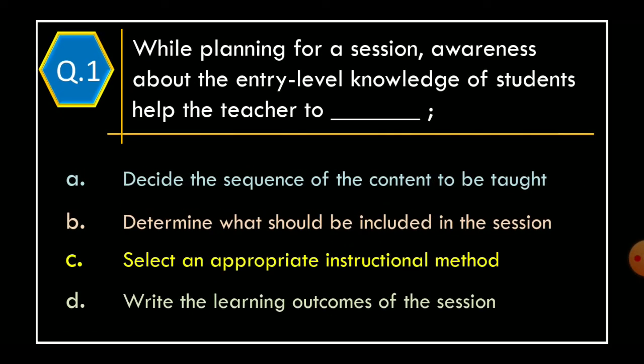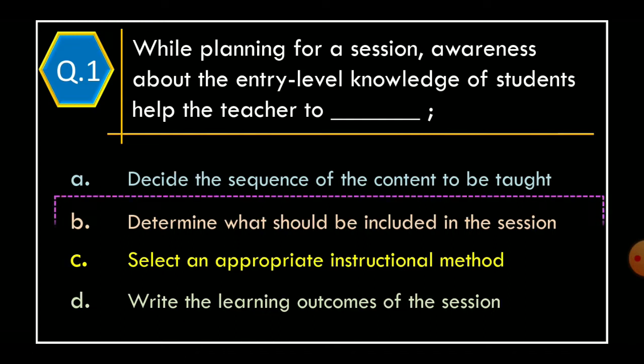Question 1. While planning for a session, awareness about the entry-level knowledge of the students helps the teacher to: Option A. Decide the sequence of the content to be taught. Option B. Determine what should be included in the session. Option C. Select an appropriate instructional method. Option D. Write the learning outcomes of the session. The correct option is Option B: Determine what should be included in the session.